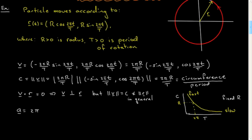You'll pull out another 2π over T from differentiating again. So you'll get a 2π over T squared times the R times, now I'll have minus cosine 2πt over T minus sine 2πt over T.